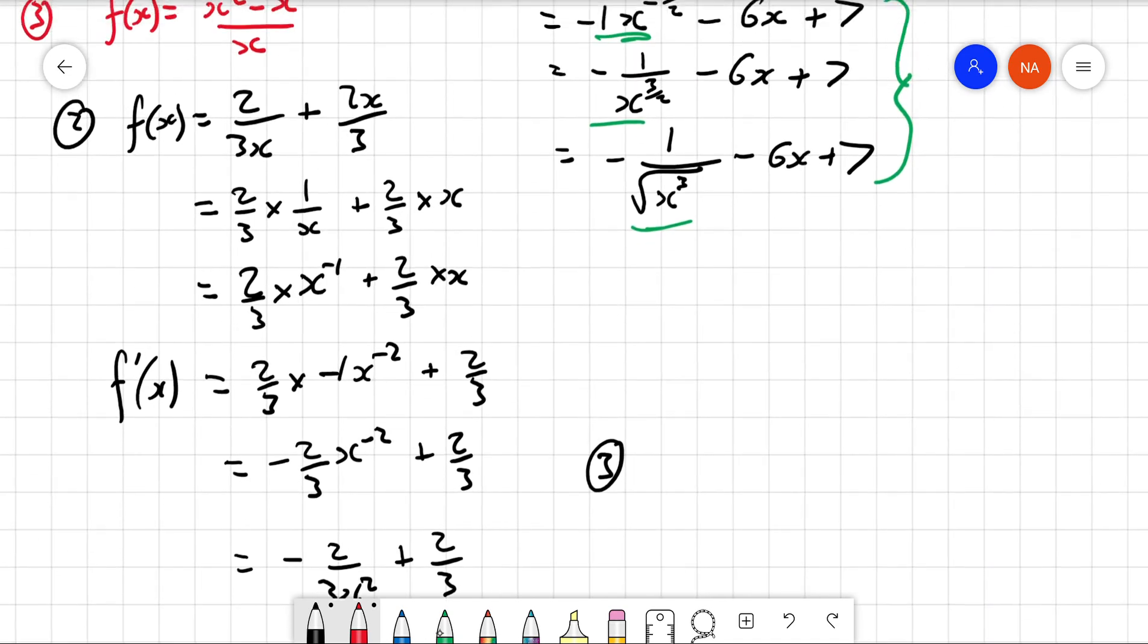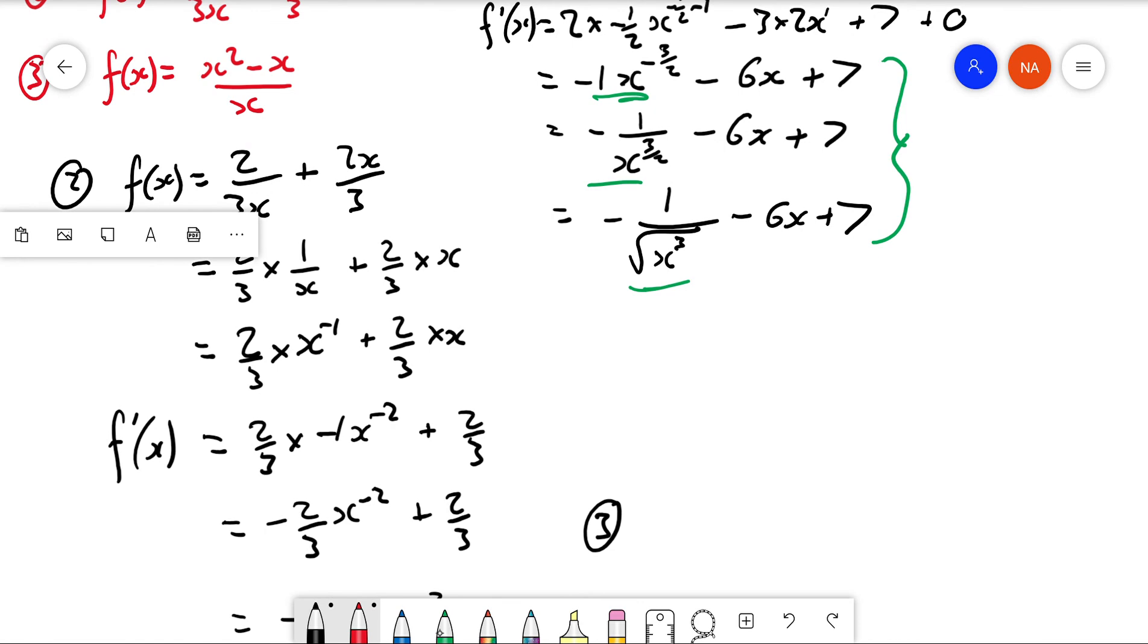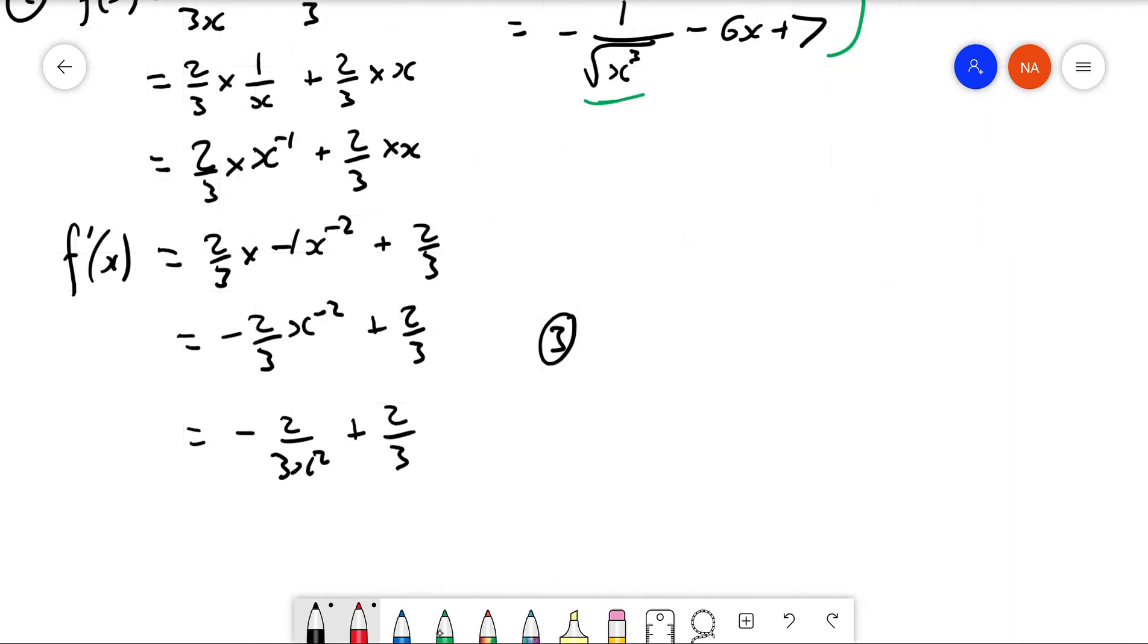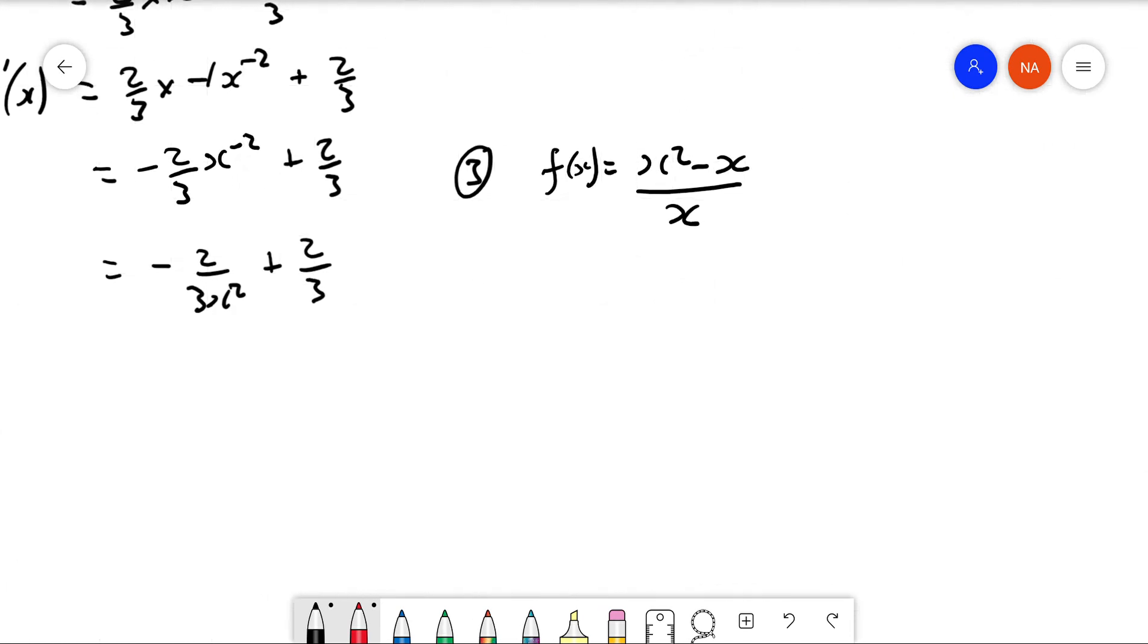f(x) equals x² minus x over x, and we're going to differentiate that. But this time, before we differentiate it, we'll just do some dividing: x² over x minus x over x, and that's x minus 1.